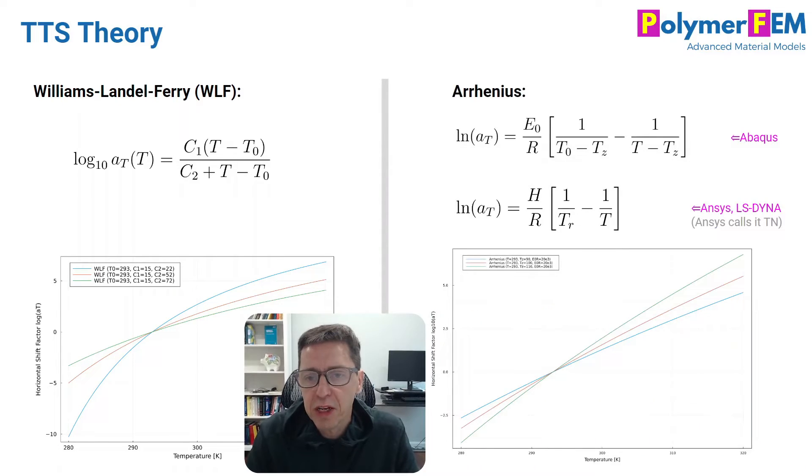Now, if you talk about the Arrhenius type time temperature shift factor equation, I've seen in the literature people talking about applying this for semicrystalline polymers. The equation that's applied here is what's used in Abaqus. Ansys, curiously, and LS-Dyna have a slightly simpler version. You can see the difference here is that Abaqus has a parameter called Tc. And if that's zero, you end up with the same equation as used by Ansys and LS-Dyna.